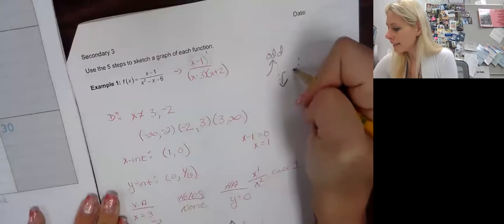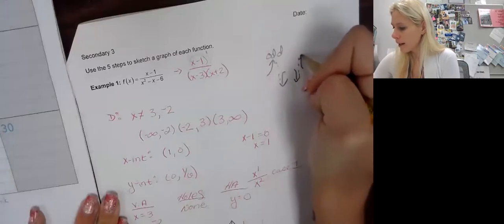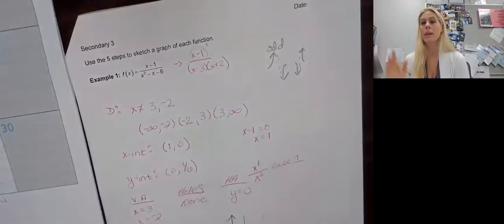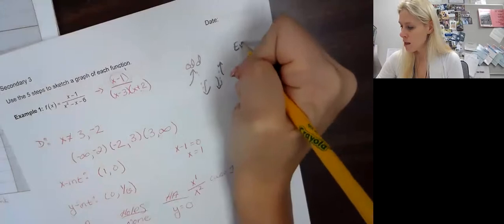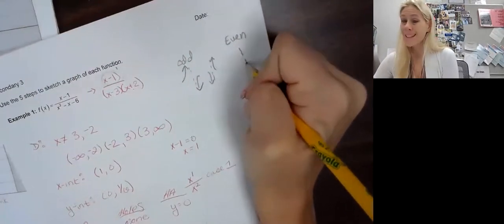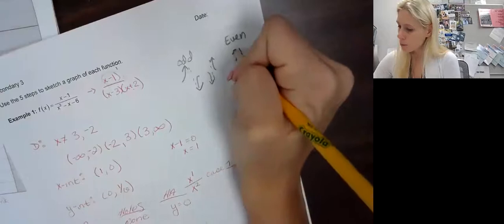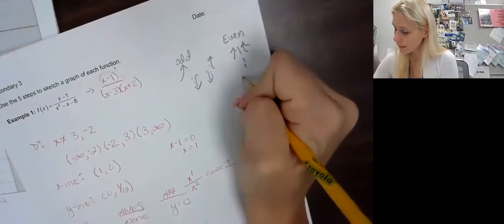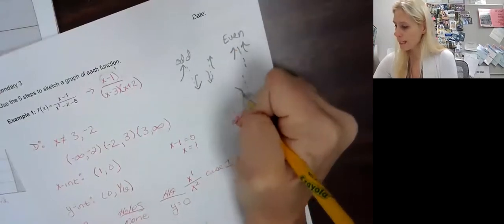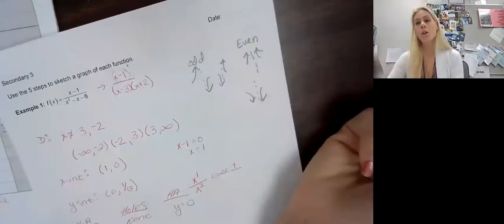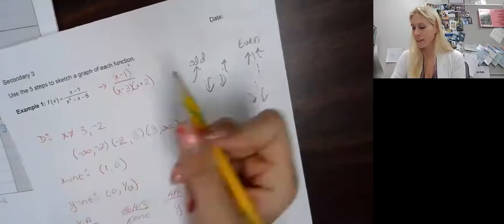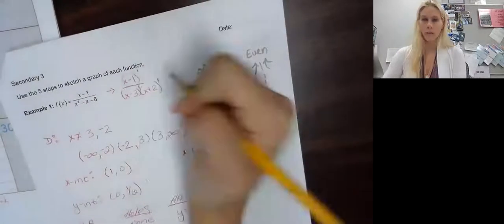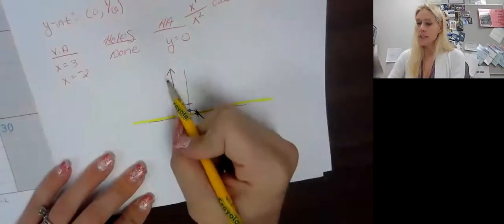Odd vertical asymptotes means that they go opposites. Now here, this is only one way I can see this. I can see this side going down and this side going up. But odd means they're going in opposite directions, where even asymptotes go in the same direction—so both up or both down.